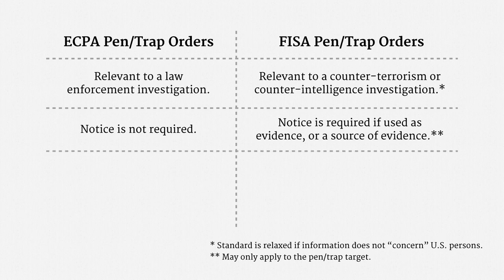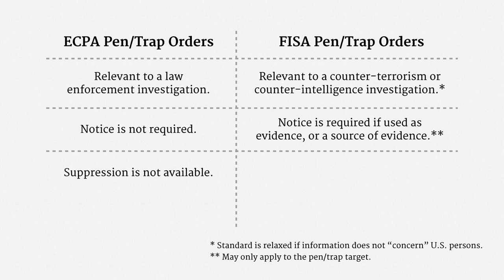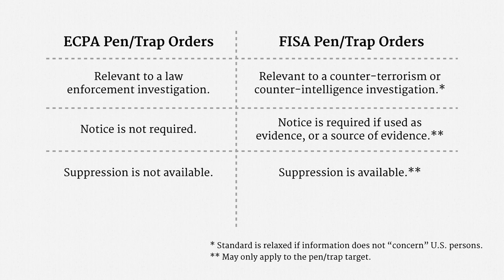Back to ECPA: there is no opportunity to suppress unlawful pen trap evidence. Investigators would be criminally liable for violating the ECPA pen trap provisions, but the resulting evidence would still be admissible. On the FISA side, there actually is a suppression remedy. If a person is unlawfully surveilled with a FISA pen trap order, that person can move to suppress the pen trap evidence and derivative evidence. Once again, the executive branch position appears to be that this right is only afforded to the target of a pen trap order.